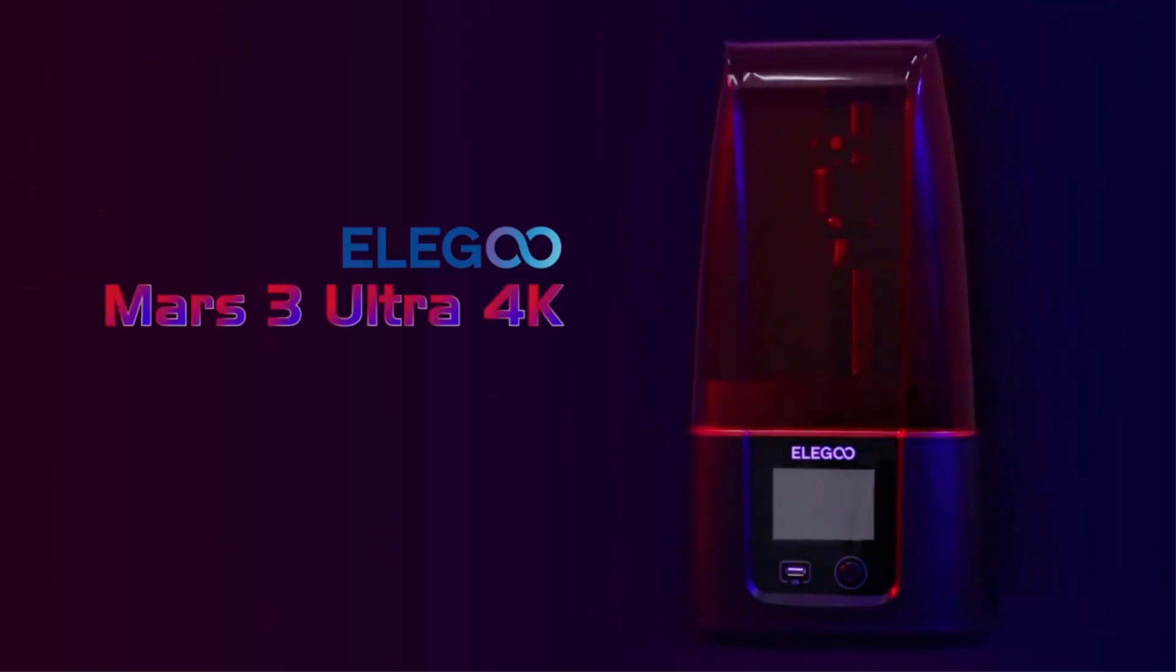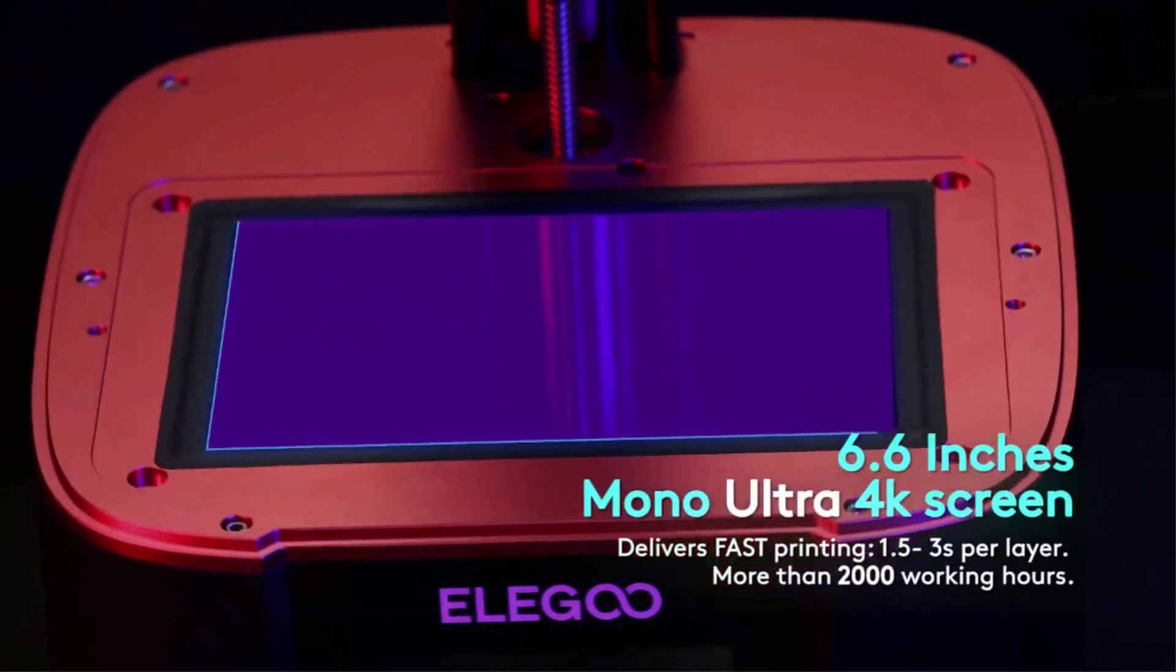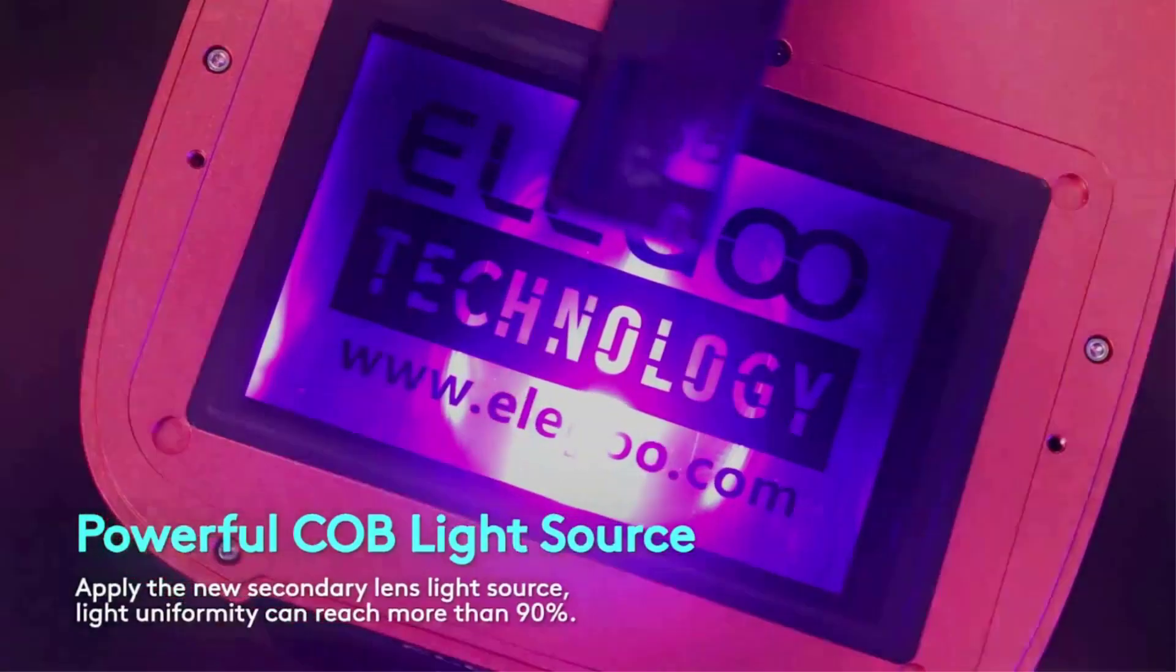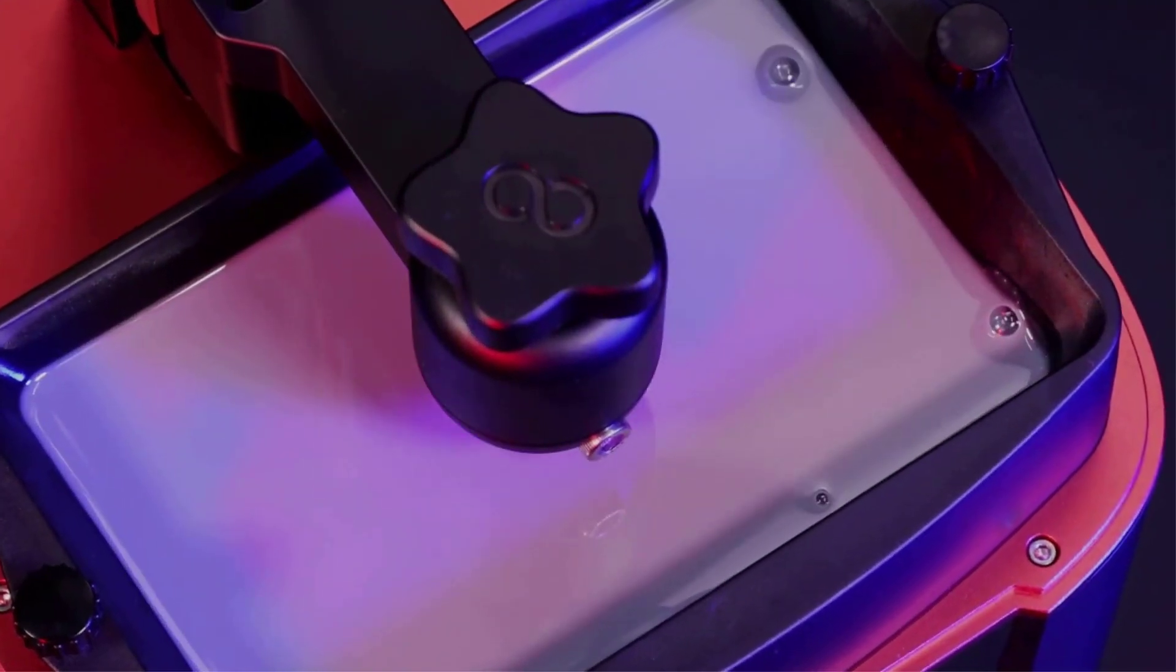The Mars 3 features a 37% larger build volume than the Mars 2 and has a dense 4K LCD screen that outputs a 0.035mm XY resolution. This results in high resolution prints with much clearer details and fewer surface artifacts.